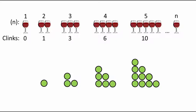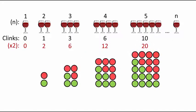Now, if we double our clinks, we can then add the same number of dots again to our triangle formation to make a rectangular formation.